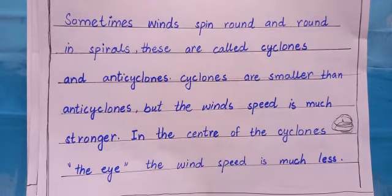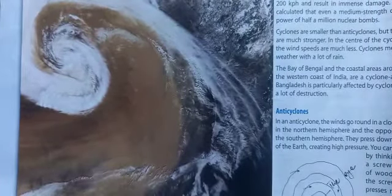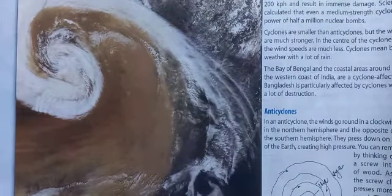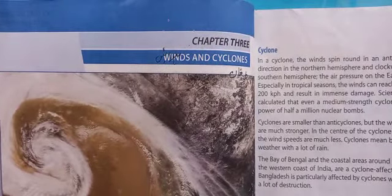Open your books. Come to page number 12. On page number 12, you will find the picture of the cyclone. You can see this is the image of the cyclone which is taken from space. This is the spinning movement of air which causes cyclones. Come to page number 12, chapter number 3, Winds and Cyclones. You can write the meanings on the title: winds mean Hawa and cyclones mean Tufan.